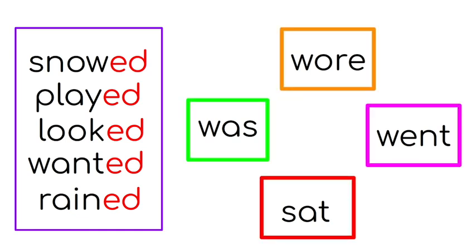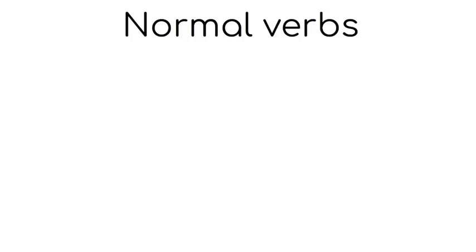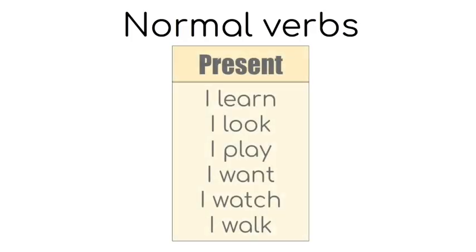And then we have some special ones that don't really fit together. They are just on the outside. They are different. Let's look at the normal verbs first. So if this is the present, we say I learn, I look, I play, I want, I watch, I walked.